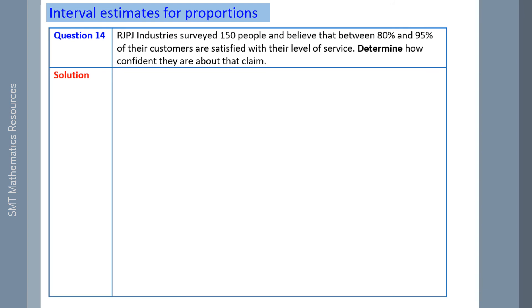RJP Industries surveyed 150 people and believe that between 80% and 95% of their customers are satisfied with their level of service. Determine how confident they are about the claim. So n, the sample size is 150. Your sample proportion of successes is the average or what's halfway between 80 and 95, which is 87.5%.